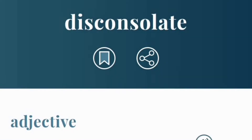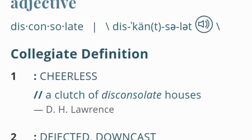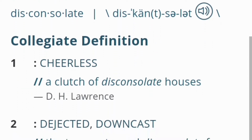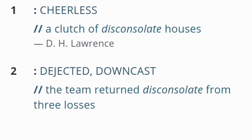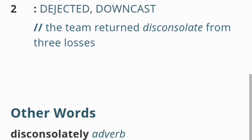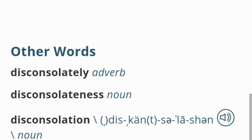The last word I'm going to share is 'disconsolate.' Disconsolate is an adjective with four syllables — the highest so far. It means cheerless or dejected or downcast. Other words formed from it include 'disconsolately,' which is an adverb, 'disconsolateness,' which is a noun, and 'disconsolation.' That last word is a lot, but it's definitely long and looks very intelligent.